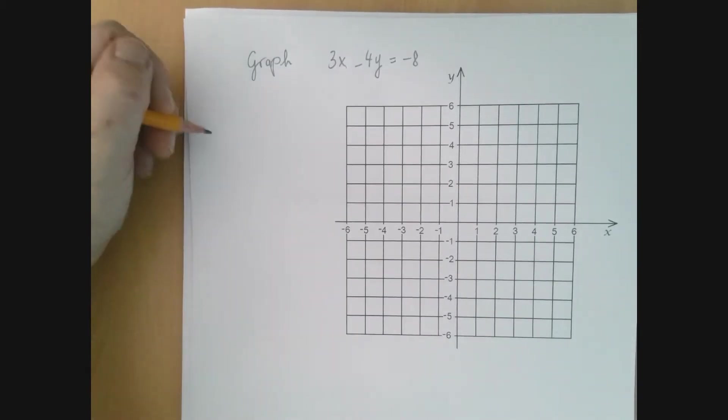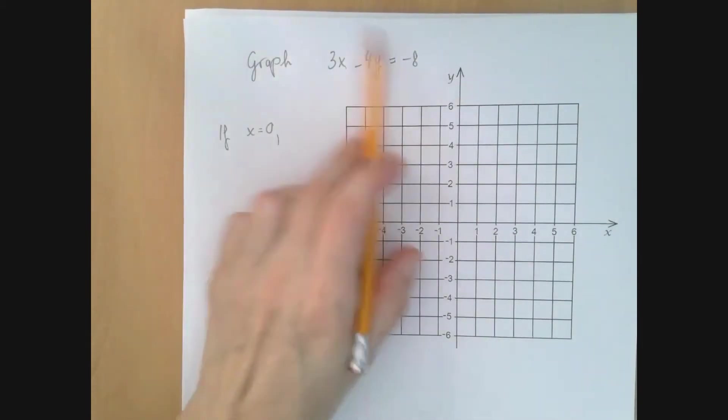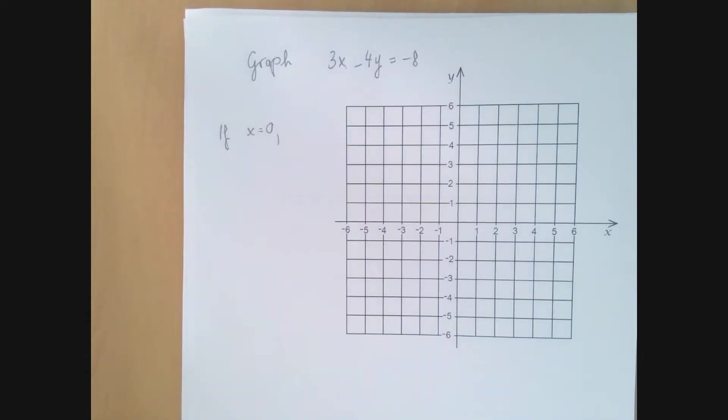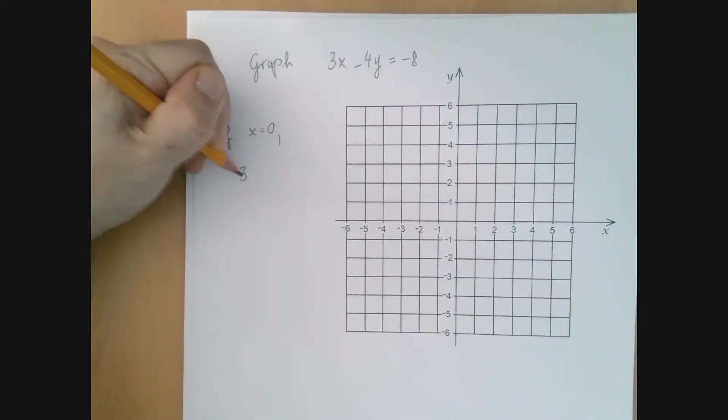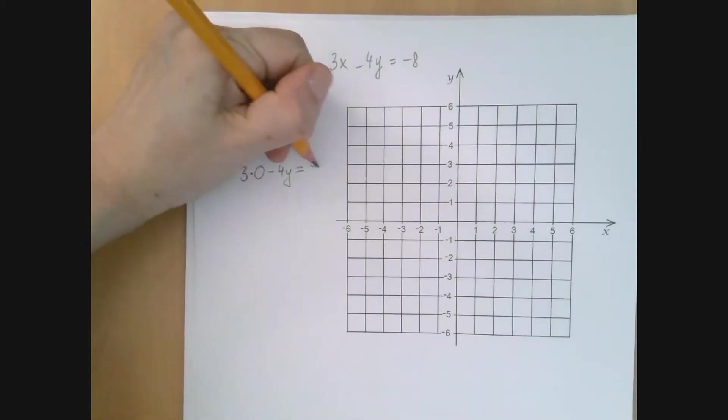Let's see what happens if x is 0. If x is 0, then for this statement to be true, we can find the y that does that if you just substitute 0 into this equation. So we write 3 times 0 minus 4y equals negative 8,